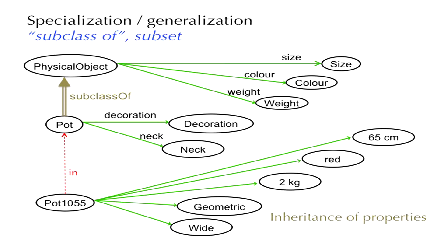If physical object is described by the properties size, color, and weight, then every pot can also be described by size, color, and weight. Since we have declared that pot is a subclass of physical object, there is no need to declare those properties again on the class pot. On the contrary, a pot may also have its own local properties that not every physical object has.